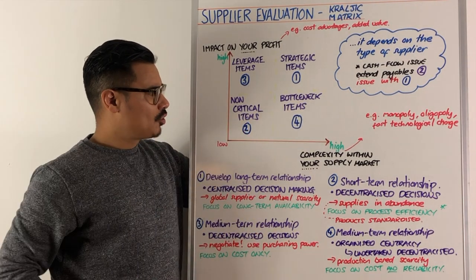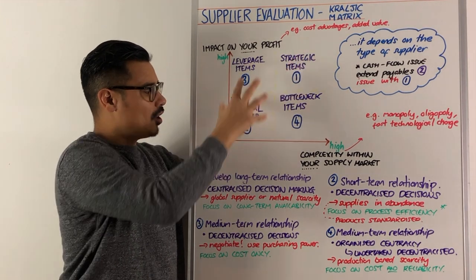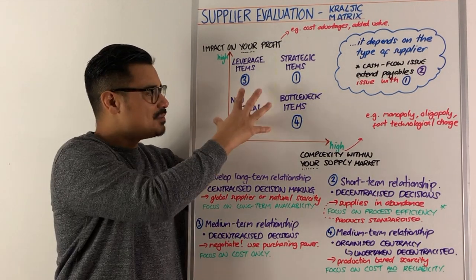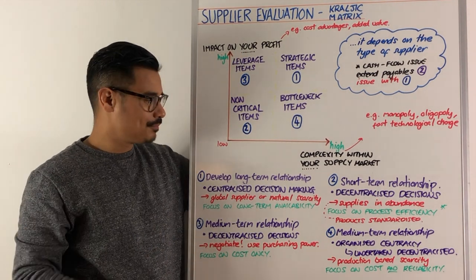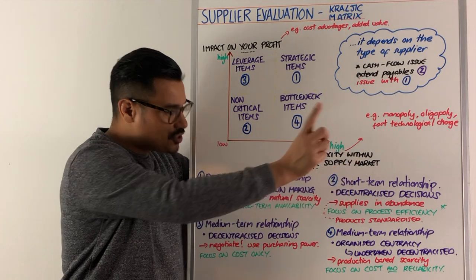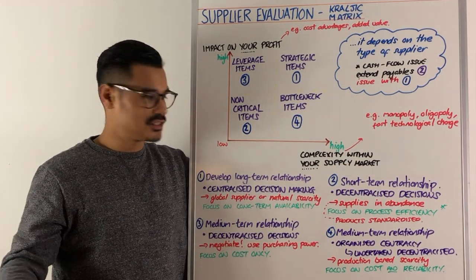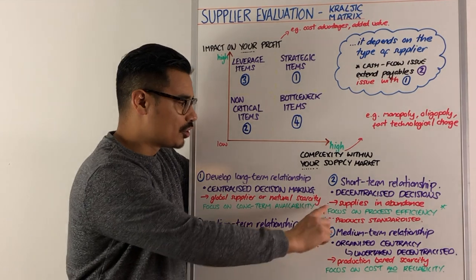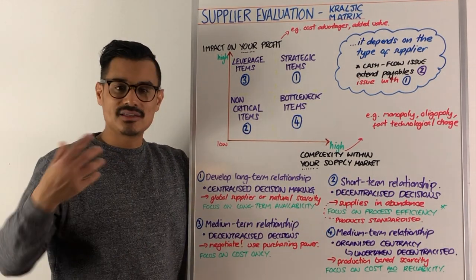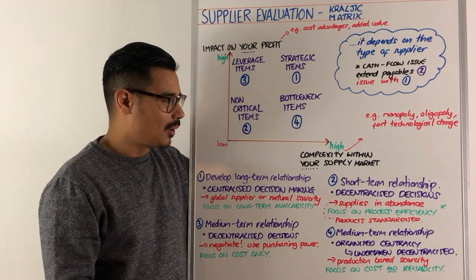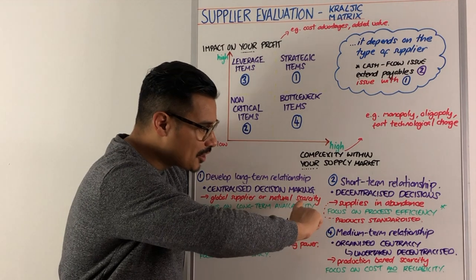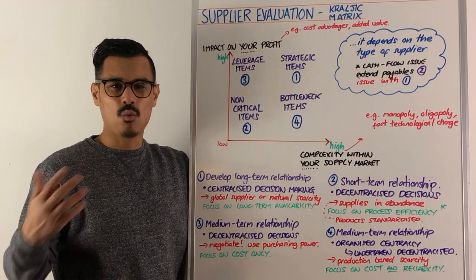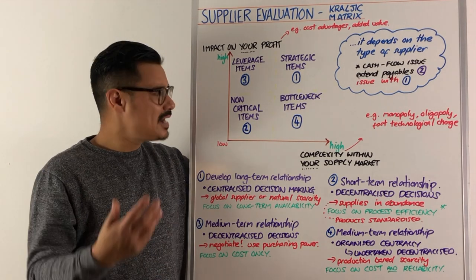Number two is non-critical items — clearly the opposite of strategic items. You perceive the supplier's market to be not very complex, and these suppliers don't have much impact on your profit. You want just a short-term relationship with no long-term strategic focus. Therefore, use decentralised decision-making and delegate it throughout your organisation. There's likely an abundance of these suppliers — pencils, for example. Focus on process efficiency: automate these suppliers because you need them, but they're not critical.